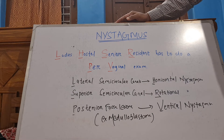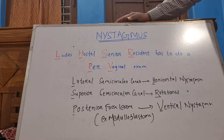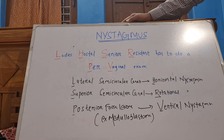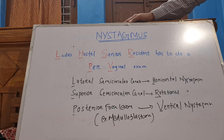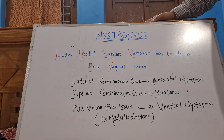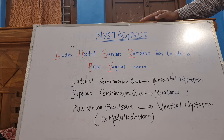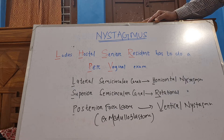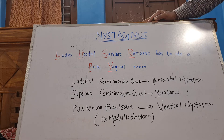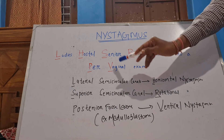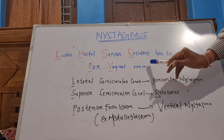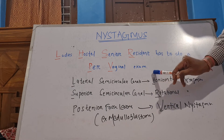Nystagmus occurs when the semicircular canals are stimulated by means of a caloric test or disease. The confusion which arises in MCQs is: stimulation of which semicircular canal causes which sort of nystagmus? We have a very nice mnemonic for this — 'Ladies hostel, senior resident has to do a per vaginal examination.'